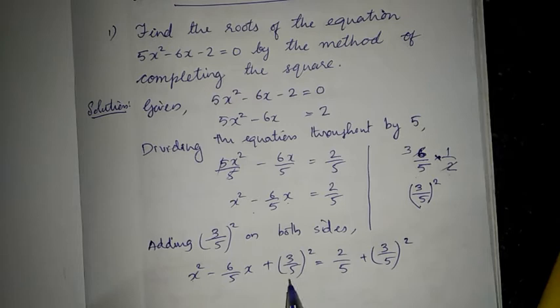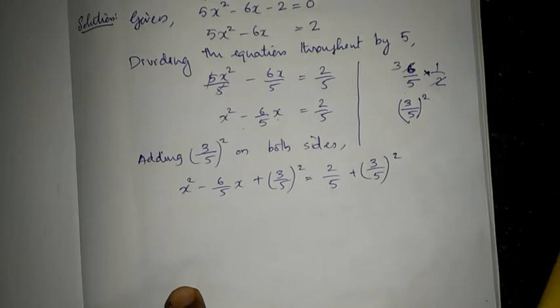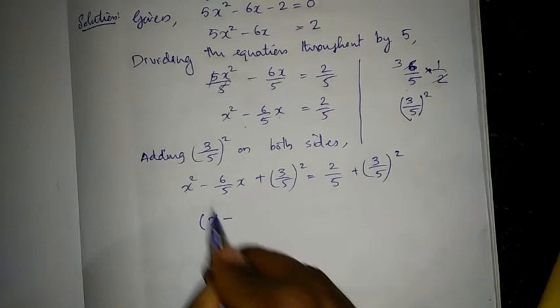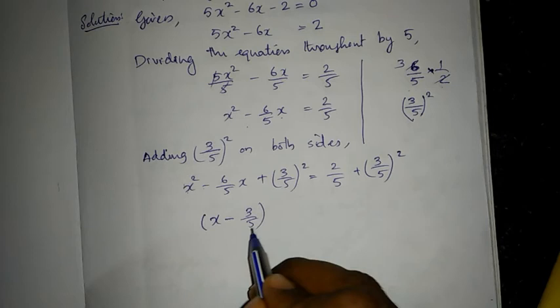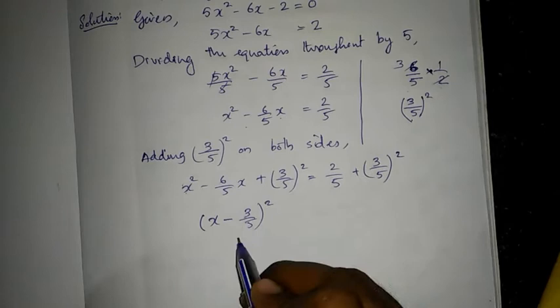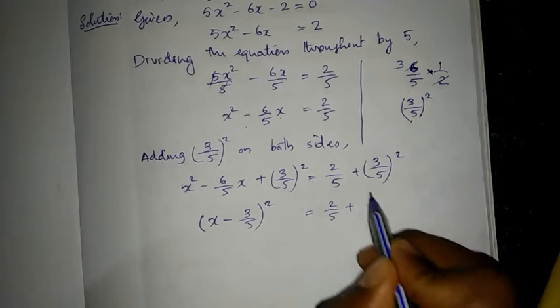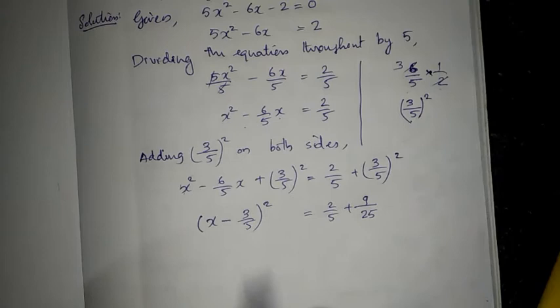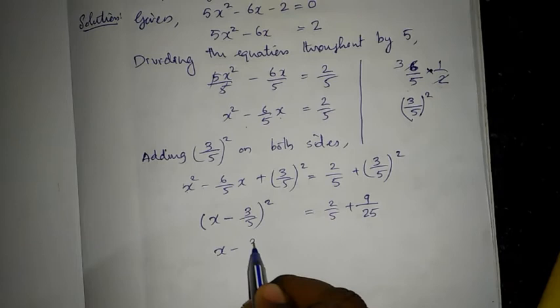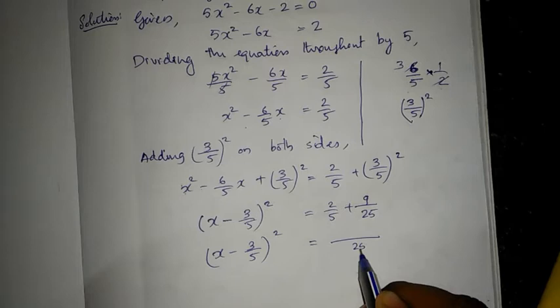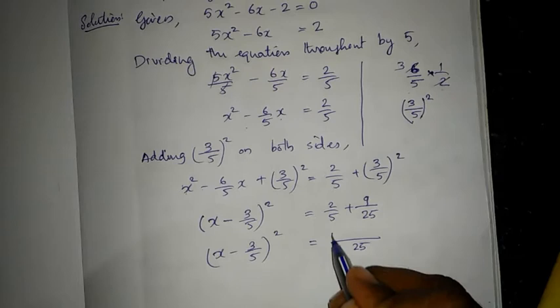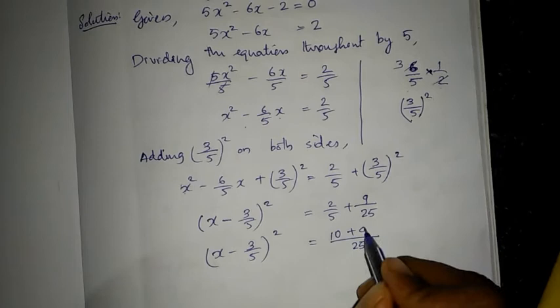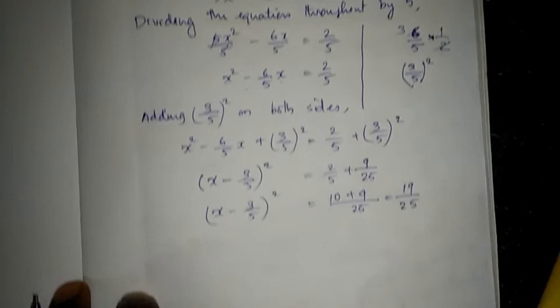The left side fits the pattern a² minus 2ab plus b², so we can write it as (x minus 3/5)² — here a is x and b is 3/5. On the right side, (3/5)² = 9/25. Taking the LCM of 25: (5×2)/25 + 9/25 = 10/25 + 9/25 = 19/25. So (x minus 3/5)² = 19/25.